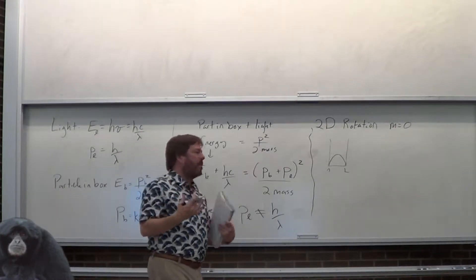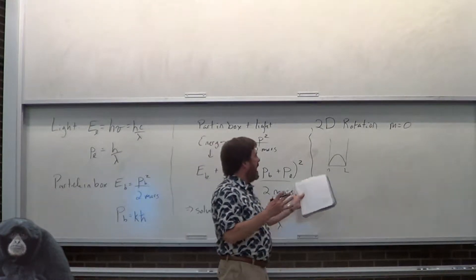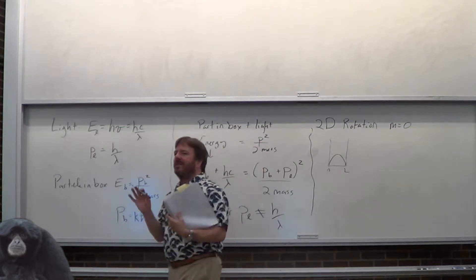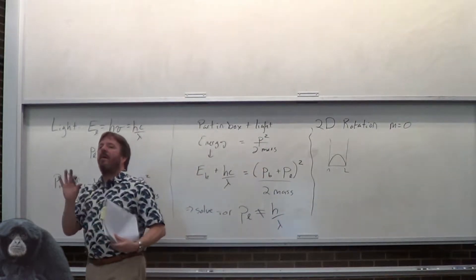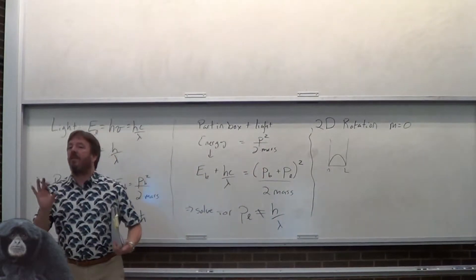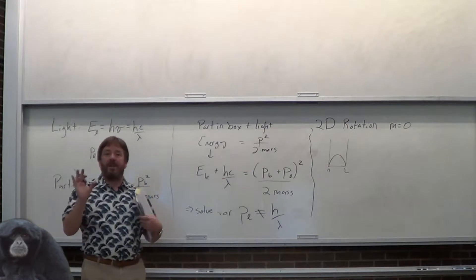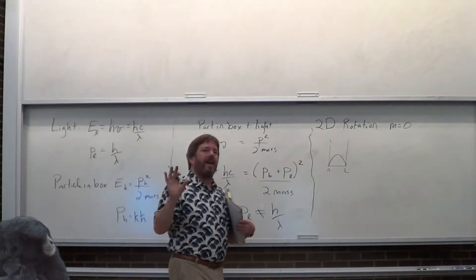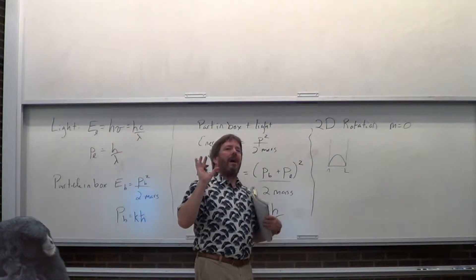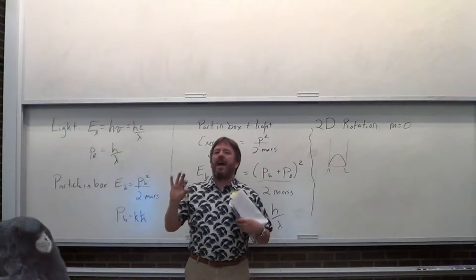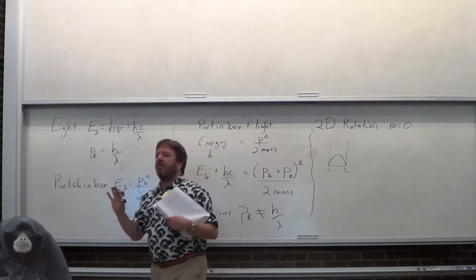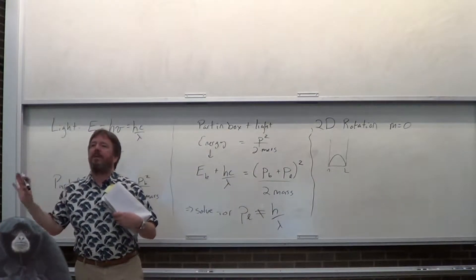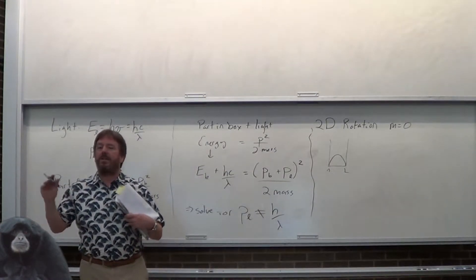Remember that the reason a particle in a box has to have a finite speed is that if it had no speed, you would have infinite knowledge of its speed, because zero is a very precise number. Because of that, it always has to have some kinetic energy so that it has some uncertainty in its kinetic energy.